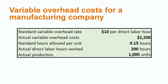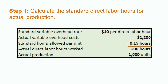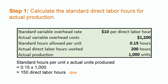Let's look at a brief example. On your screen, you're seeing some information related to the variable overhead costs for a manufacturing company. Using this information, we can calculate the total variable overhead variance in three quick steps. Step 1 will be to calculate the standard direct labor hours for actual production. In this example, they budgeted to spend 0.15 hours on every unit they produced. If we look at the actual production, we see that they produced 1,000 units. So to determine the standard direct labor hours, we take the standard hours allowed per unit of 0.15 hours and multiply by the actual units produced of 1,000 units, for a result of 150 direct labor hours. This is the total number of hours the company should have spent on the actual level of production.